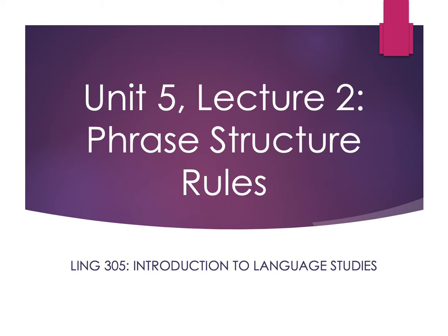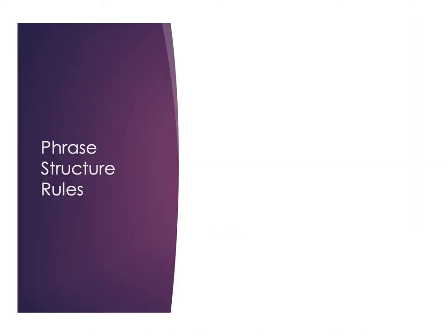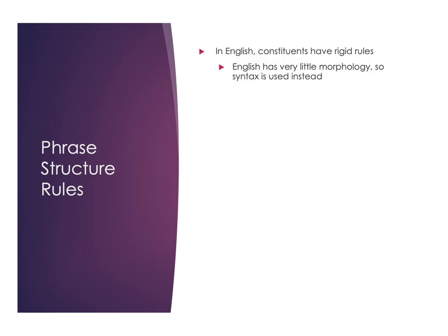Welcome back. Today we're going to be looking at phrase structure rules. We're going to take what we've learned from constituency and what makes a constituent, and actually look at the pieces that make up the main constituents in English. Phrase structure rules offer us the rules we actually use to put things together. In English we have very rigid rules of what constituents can have and what they can do, and we have a very limited amount of morphology. So in English we use syntax to convey meaning and relationships between pieces in a sentence.